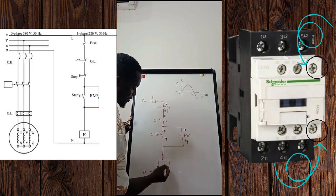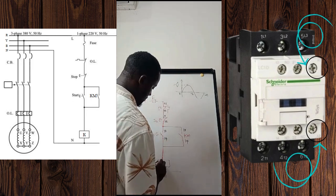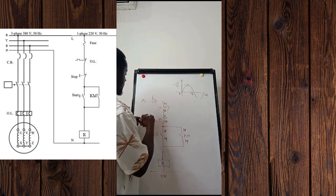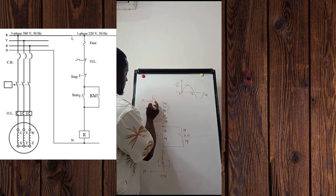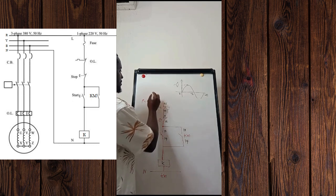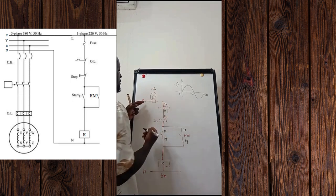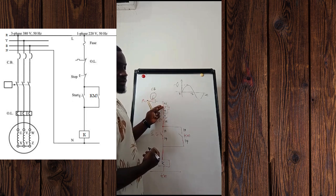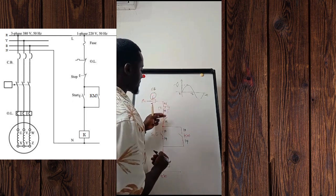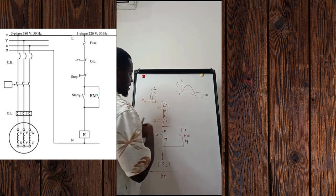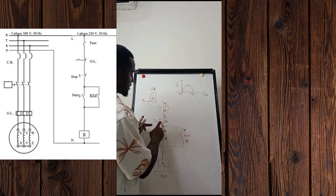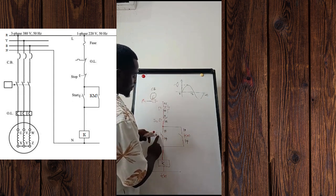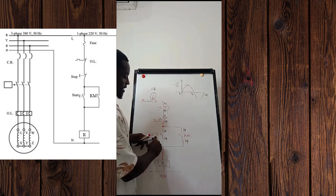Here we have our coil, which we'll call K. Now what happens is when we fit the fuse or the circuit breaker with a single phase supply, current hits first on the normally closed contact of the thermal relay, which is 95-96. Current flows since it's a closed contact, moves and gets to the stop push button S0, and from S0 it moves and gets to the upstream of push button S1.